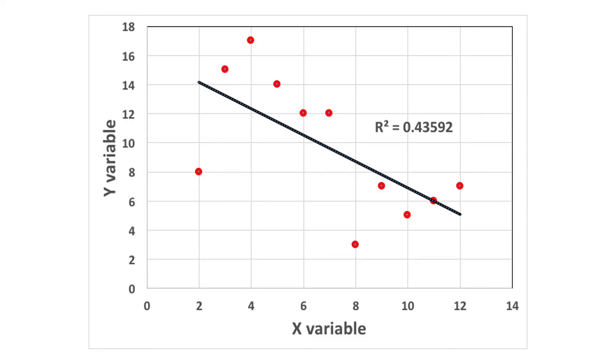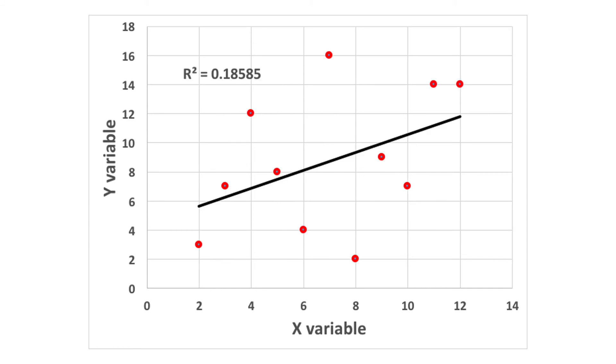Here's a scatter plot where the regression model has an r squared of 0.43592, or about 0.44. This means that 44% of the variation in the dependent variable is explained by the regression model. And here's a scatter plot where the regression model has an r squared of 0.18. Here you see pretty large residuals — in other words, a lot of the points are very far away from the regression line. If you have small residuals, in other words if all the points are pretty close to the line, you have a much higher r squared.